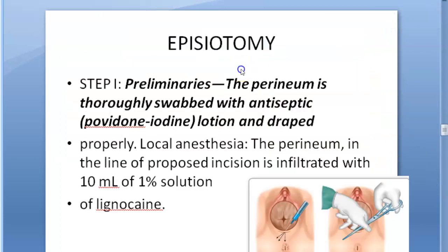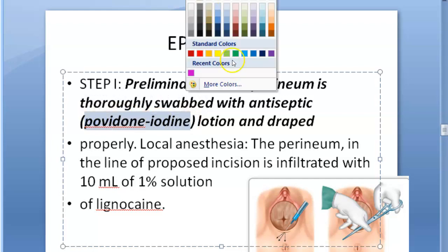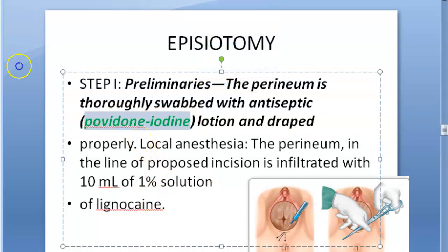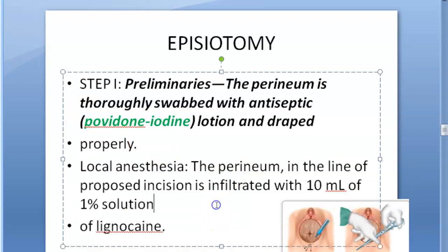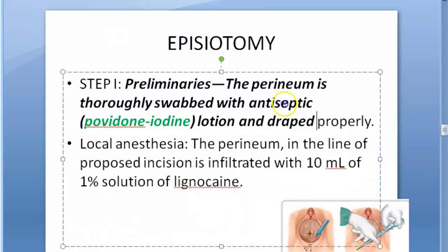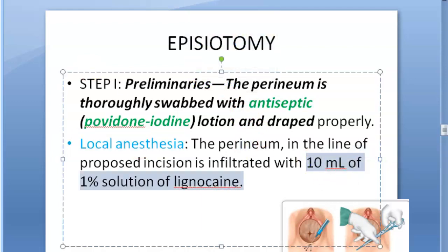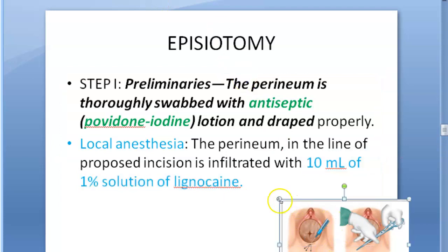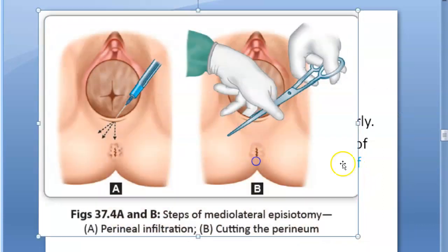For the preliminaries: you will use povidone iodine for creating a sterile environment. Then local anesthesia — 1% solution of lignocaine, 10 ml. So antiseptic: povidone iodine. Local anesthesia: 10 ml of 1% solution of lignocaine. Looking at the image, they are taking the syringe and giving it in three directions, and then doing the mediolateral episiotomy — steps include perineal infiltration and cutting the perineum.